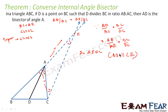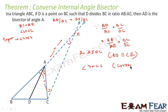We wanted to prove AD is parallel to CE because we wanted to develop a relation between angles 1 and 2 and angles 3 and 4, similar to what we did in the last example. Since we have proved that AD is parallel to CE, we can prove that angle 3 is equal to angle 2 — by corresponding angles.